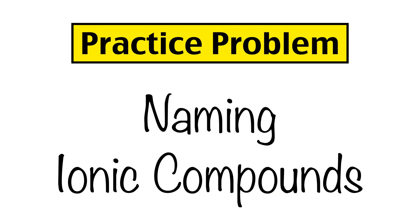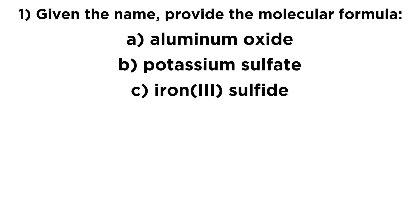Today we're going to practice naming ionic compounds. So first, given the name, we want to provide the molecular formula. So we have aluminum oxide, potassium sulfate, and iron sulfide.